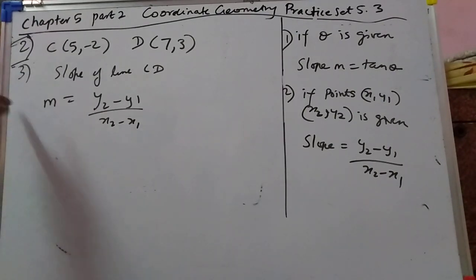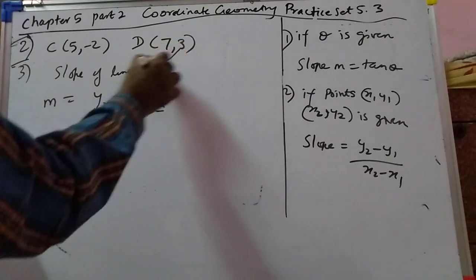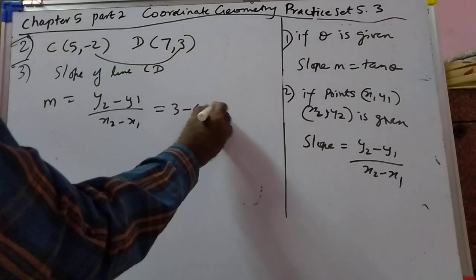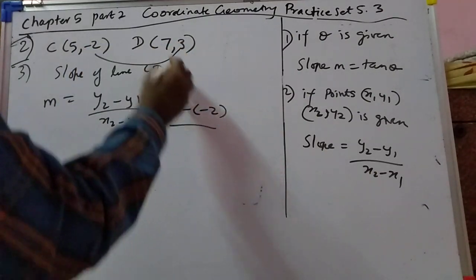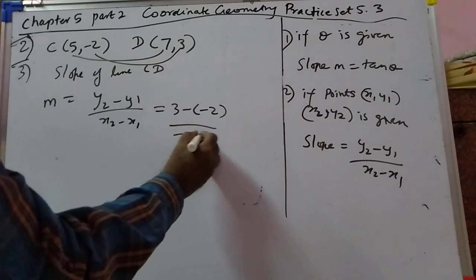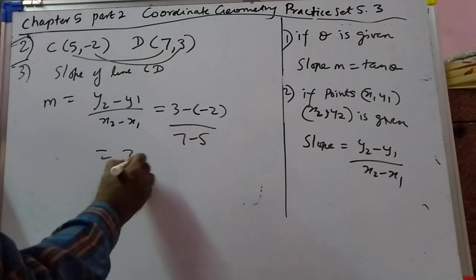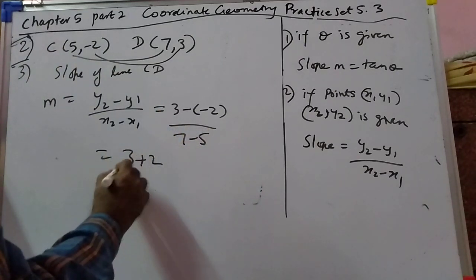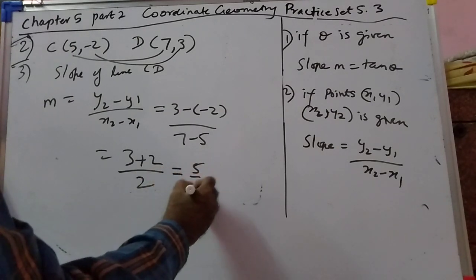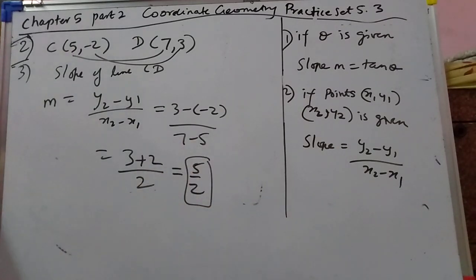Third problem: y2 minus y1 over x2 minus x1. So 3 minus 2 minus 2, over 7 minus 5. That gives 3 plus 2 upon 2, which is 5 by 2.